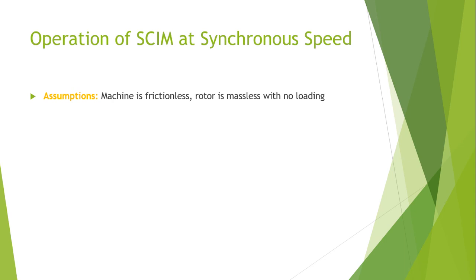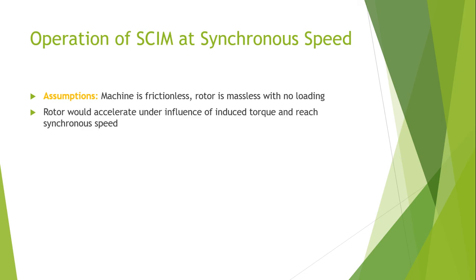Now I will discuss the operation of a squirrel cage induction machine at synchronous speed. We assume the machine is frictionless — meaning we ignore the effect of friction on the moving parts — and that the rotor is massless, so we also negate the loading effect.